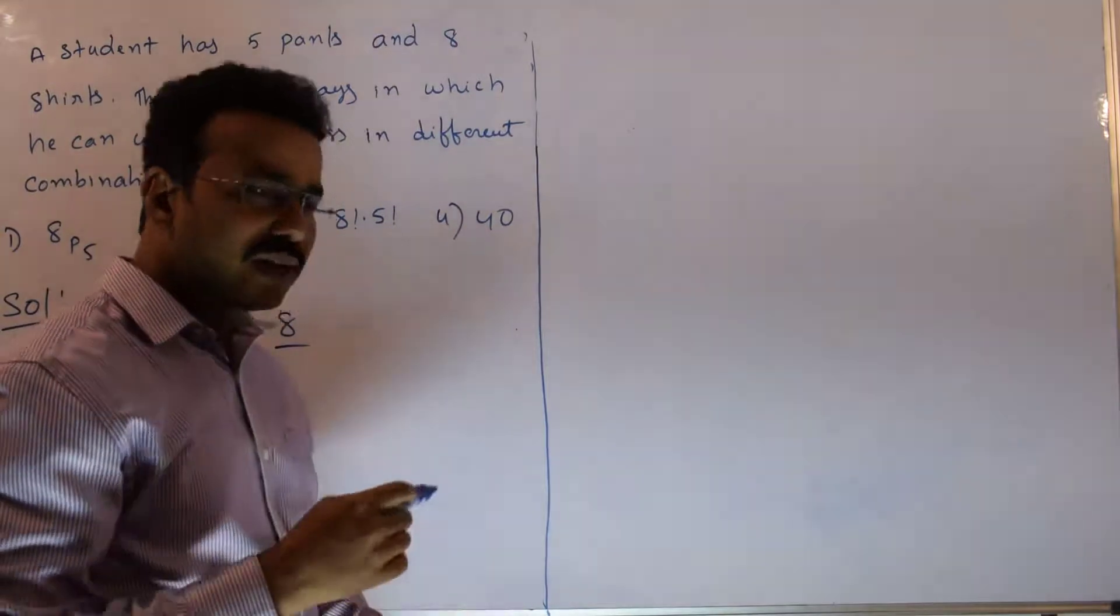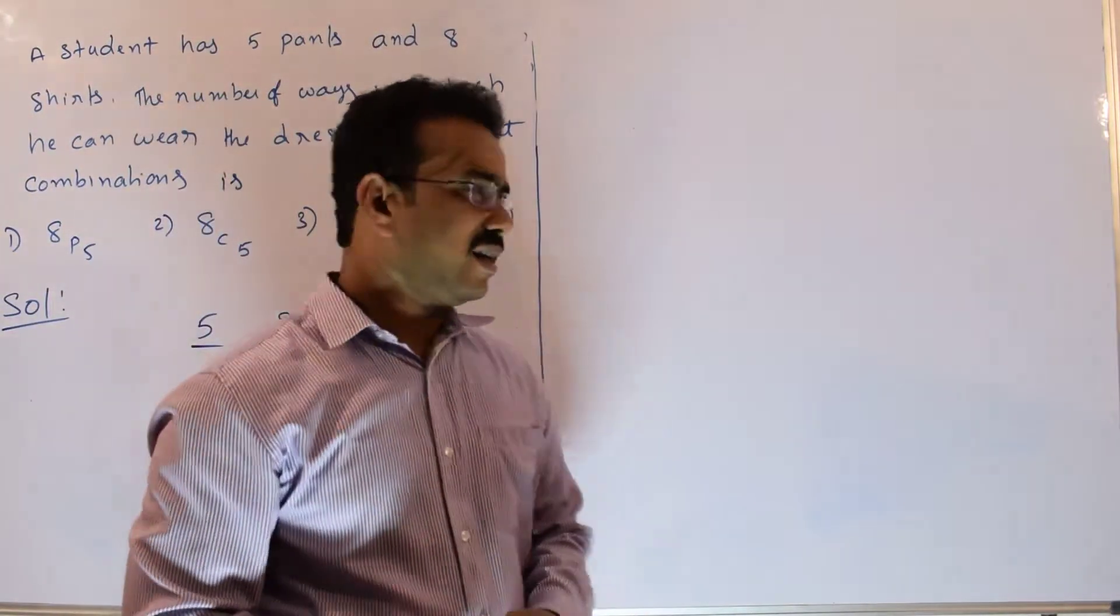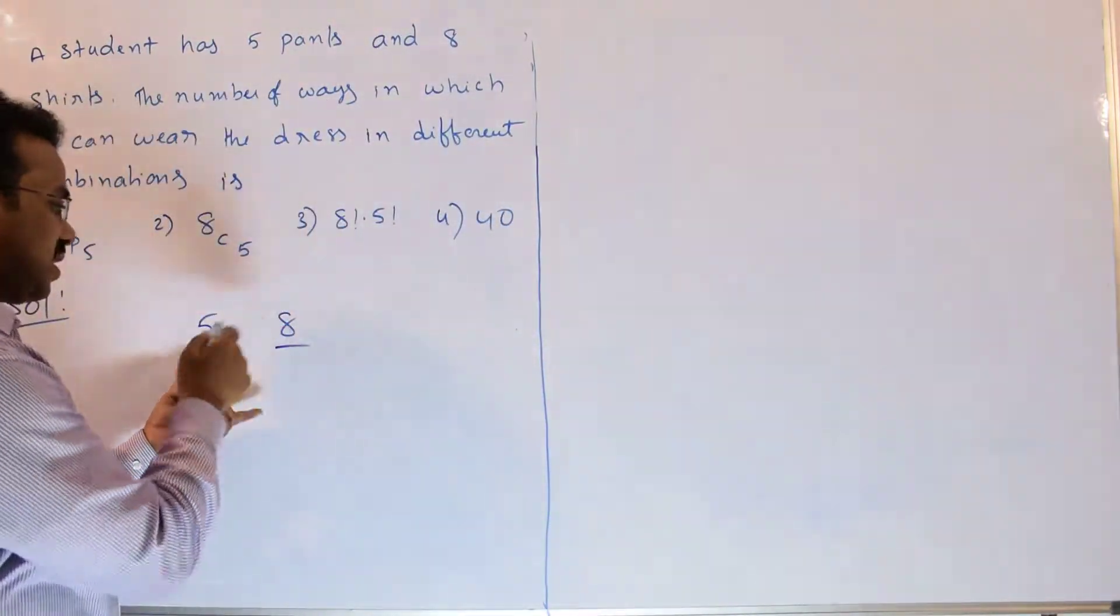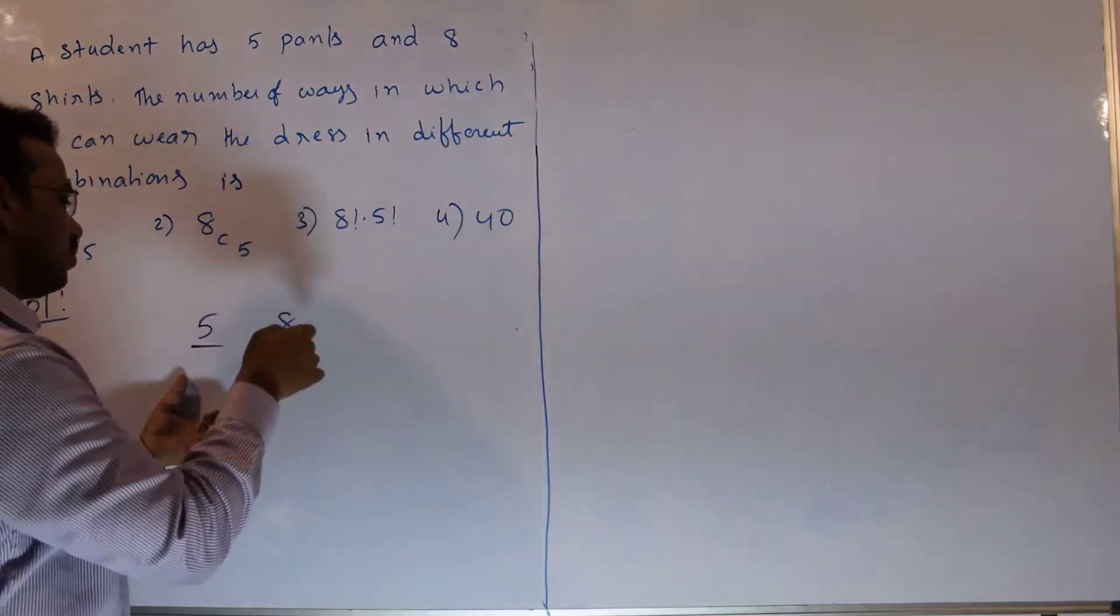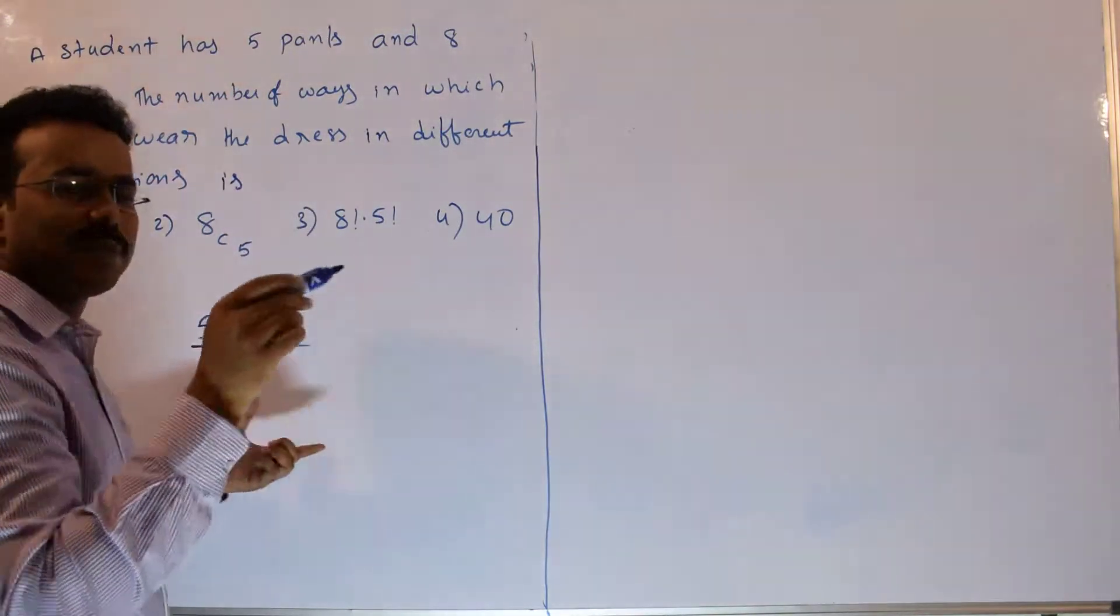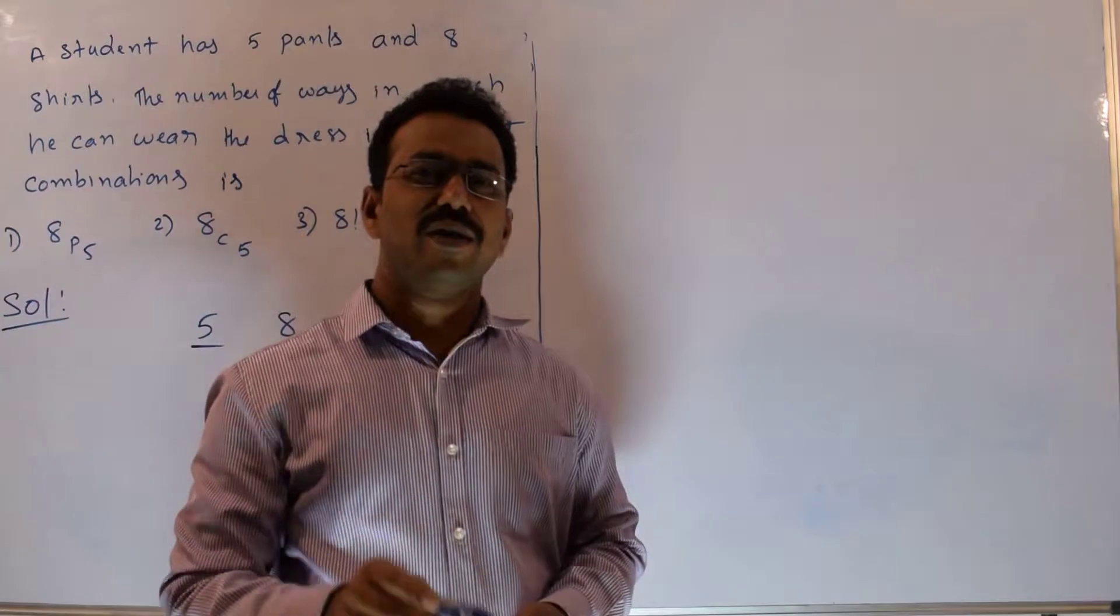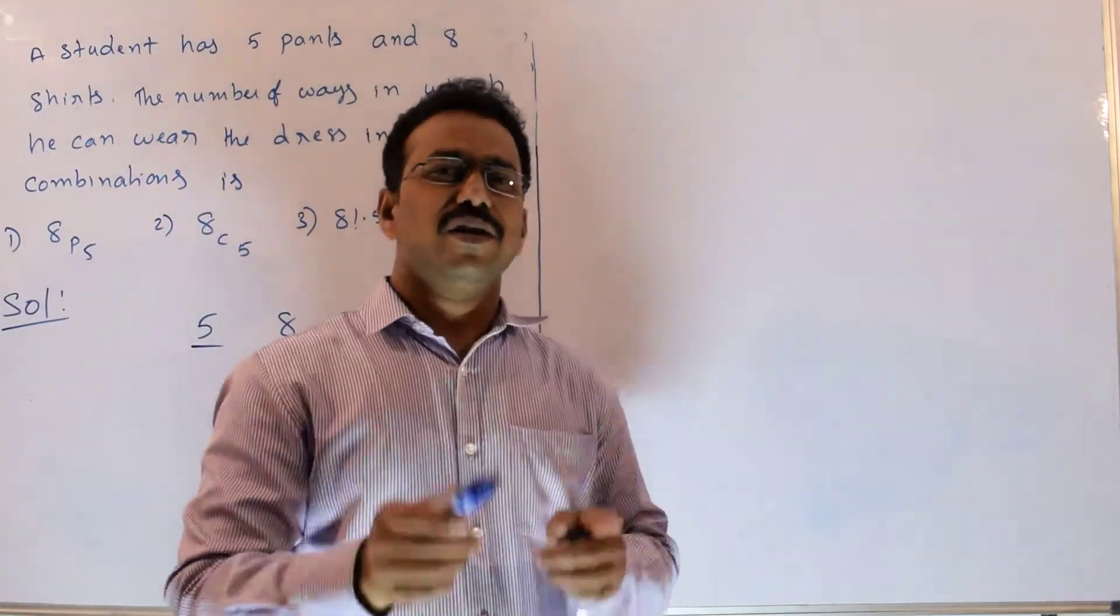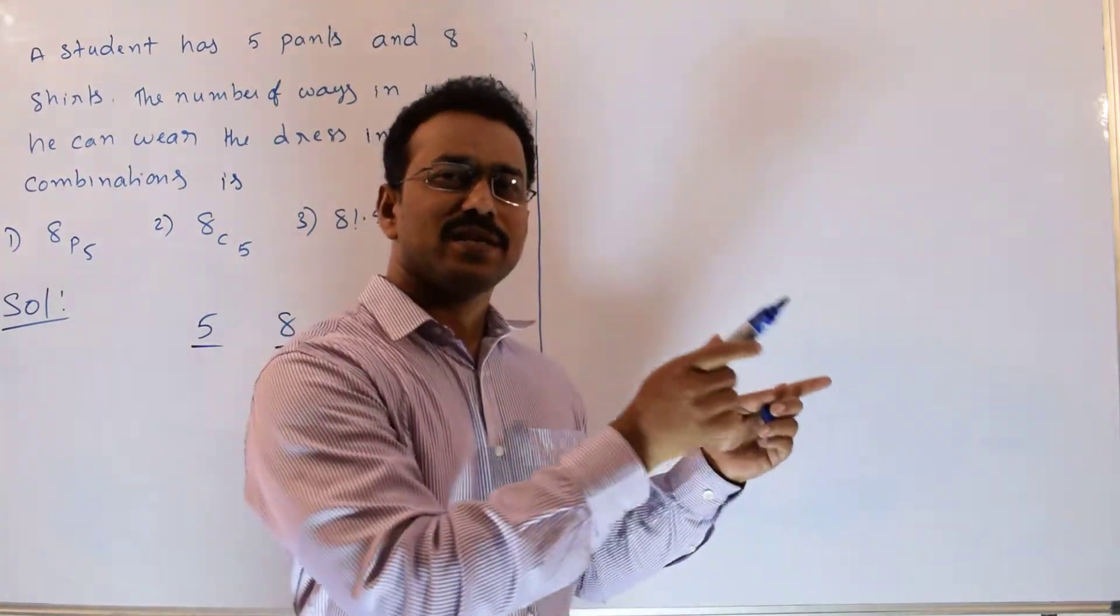Now I want the total number of ways. To perform the task completely, we need to fulfill these two tasks. So you have to apply the multiplication rule. When both come into the picture, you should adopt the multiplication rule.